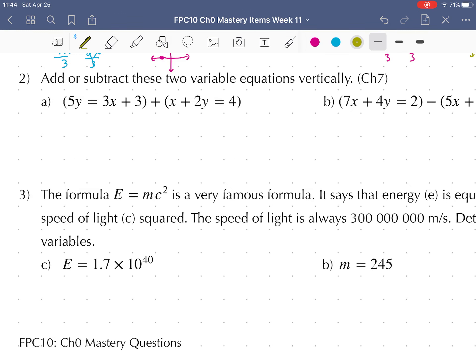Alright, let's add or subtract these two variable equations vertically from chapter 7. First thing we need to do, let's check that everything's in the right order. The preferable form is x and then y and then equals some number. So I want to take this 3x and bring it over. When I take that 3x and bring it over, it becomes negative 3x. So this equation will look like negative 3x plus 5y equals 3.